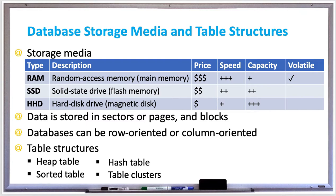SSD is a solid state drive or flash memory that's fast, not too expensive, a little bit bigger in capacity than RAM, but it's non-volatile, which means it's stored on disk. And then HDD, or hard disk drive or magnetic disk, it's slower, but it's a lot cheaper, has a much larger capacity, and it's also non-volatile.